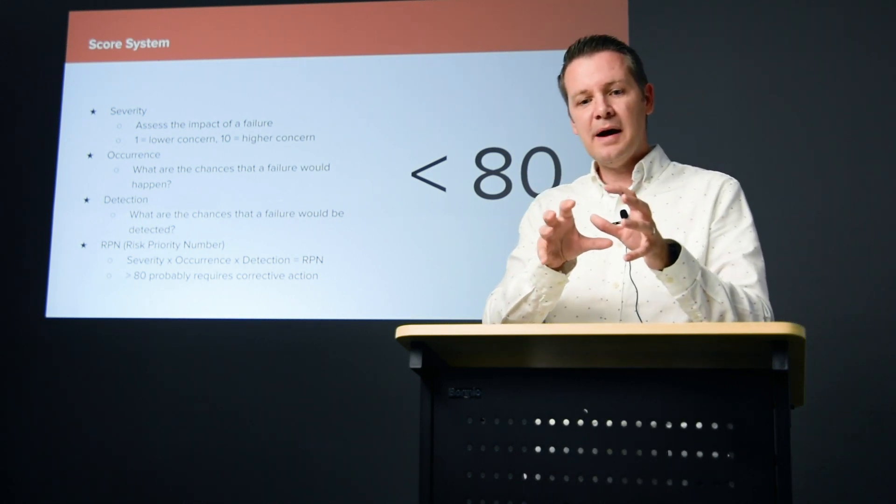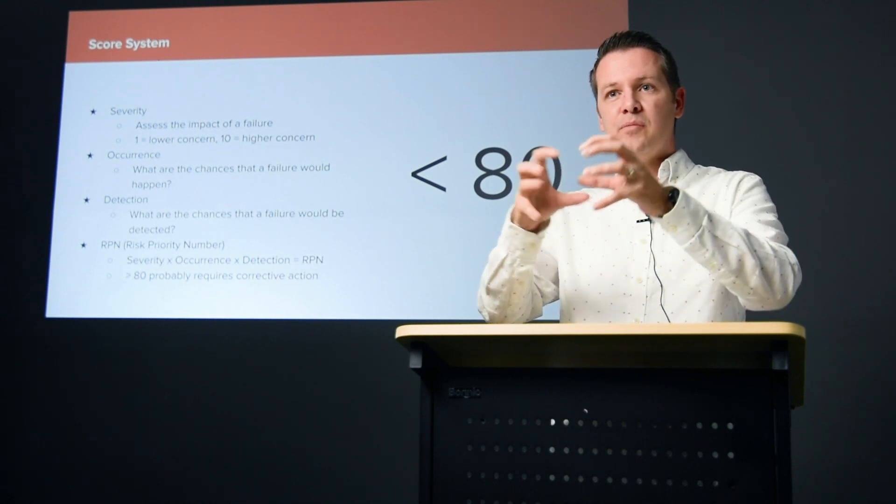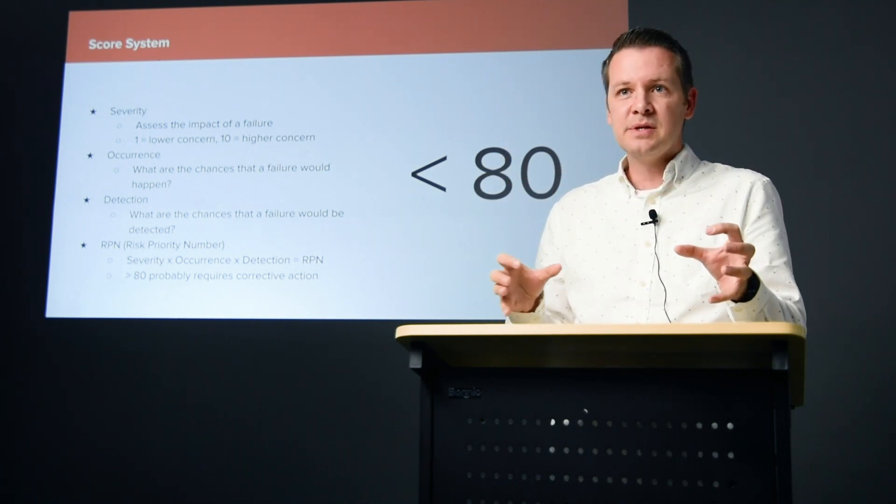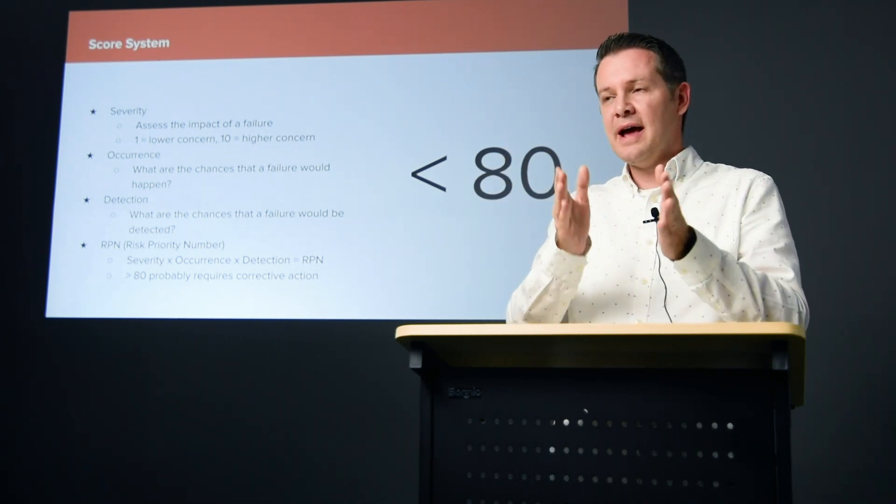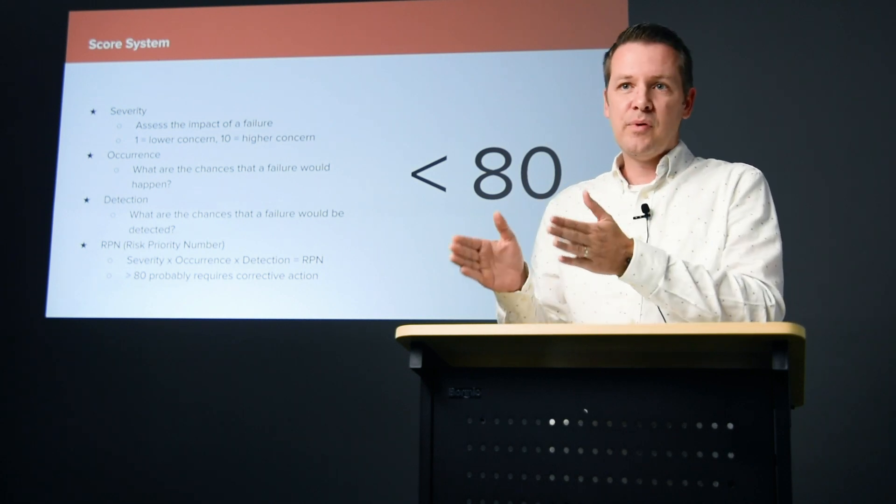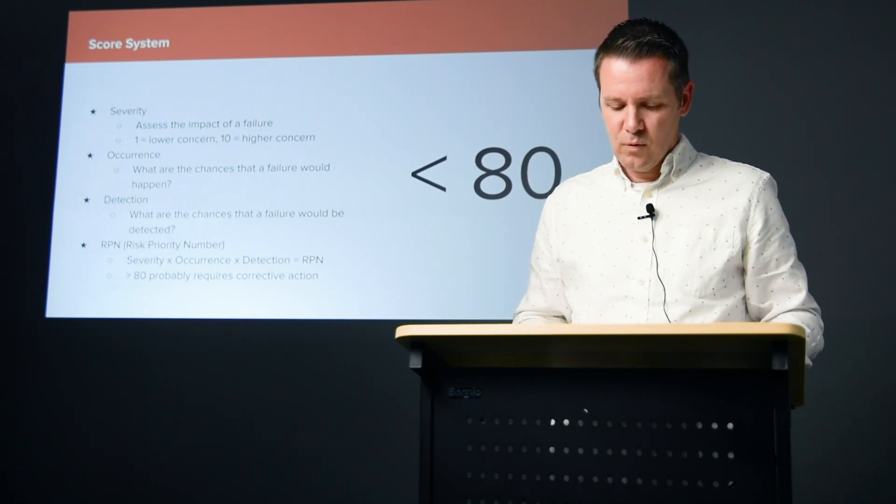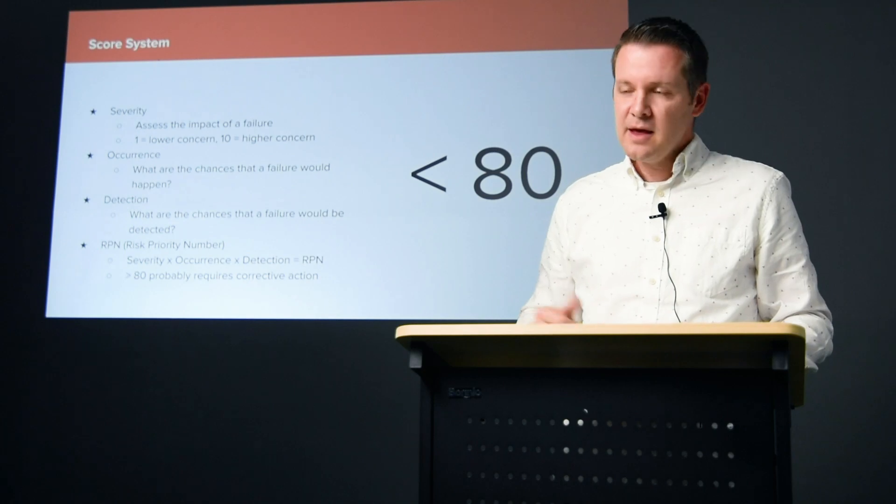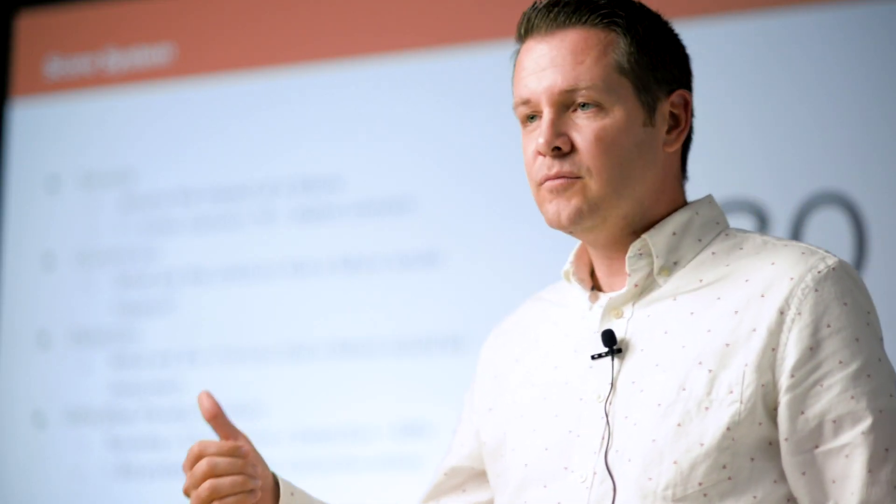Sometimes you have to take that step and break it down into additional steps so you can really slice it apart and analyze where the problems are and what you could do about it. Then you have occurrence: what are the chances that a failure would happen? One being unlikely, ten being inevitable.